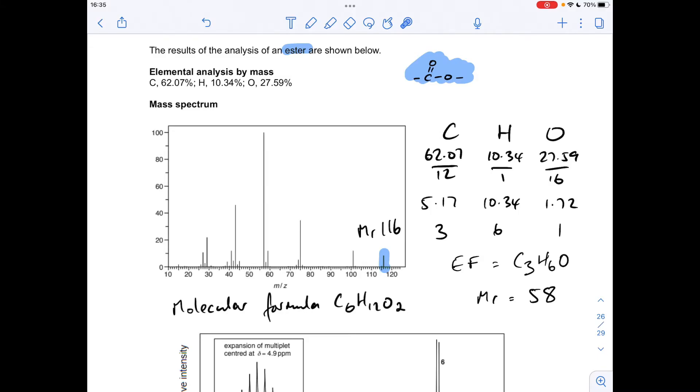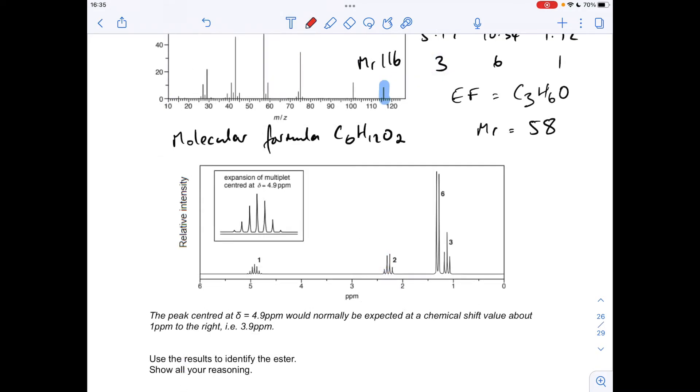So we'll just park the mass spectrum for the moment. I'll come back to it at the end once we've got the structure for the ester, and we'll try and identify a fragment peak, just in case there's a mark going for that. So obviously the bulk of the marks is for processing the proton NMR spectrum. So we'll start with this signal here, and you can see I've just put a little reminder about this information. This signal should be here at about 3.9 ppm. So in terms of splitting pattern, it's a heptet,